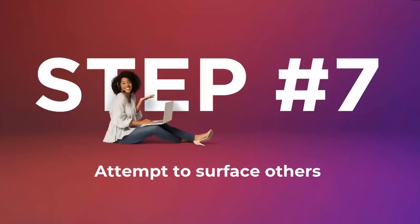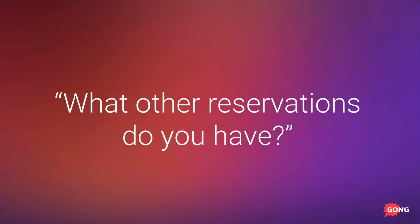Finally, step seven in the objection handling framework: attempt to surface others. The last thing you say once you've overcome and resolved an objection is 'What other reservations do you have right now?' Since your buyer is in the mood to voice concerns, if they have other potentially deal-killing concerns, this is a great time to get those out so you can address them head on. If they have no other concerns, march your sales process on. If they do, go back to step one and work through the seven-step process again.